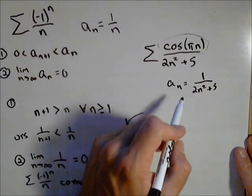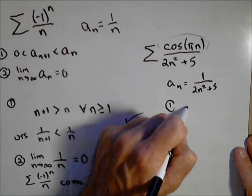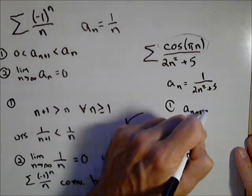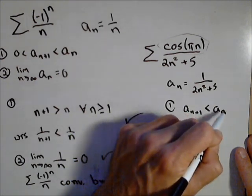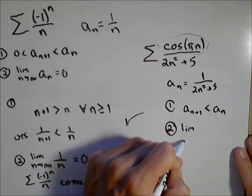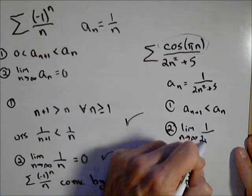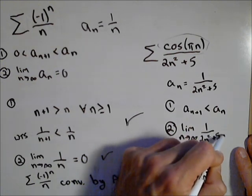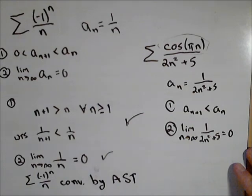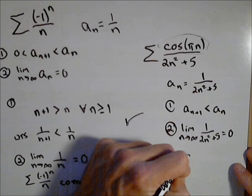So all I have to do is show this is decreasing. I'll leave that up to you. We would show that a sub n plus one is in fact less than a sub n. And two, you can probably see it already, the limit as n goes to infinity of one over two n squared plus five equals zero. So this would be convergent by the alternating series test.